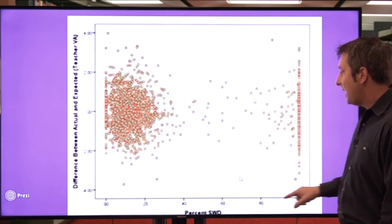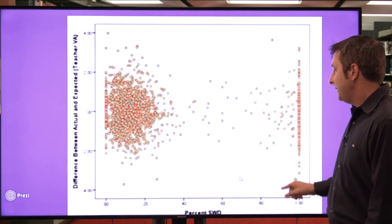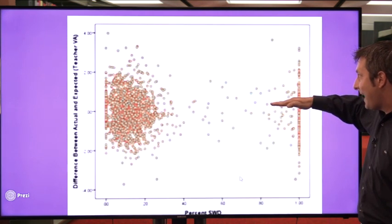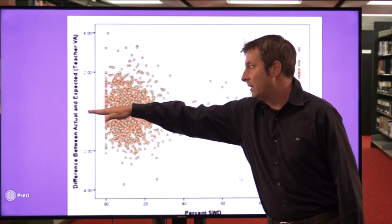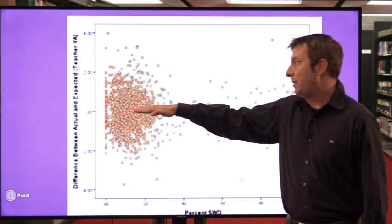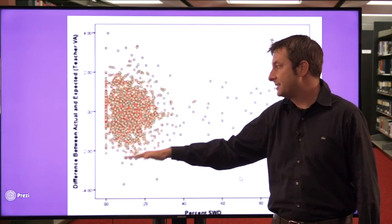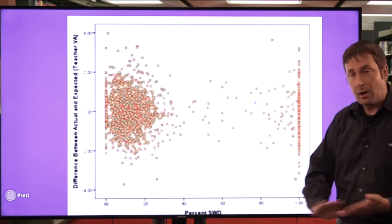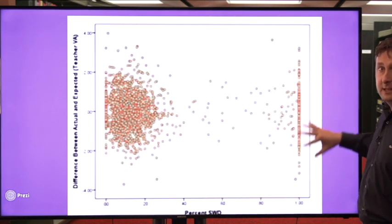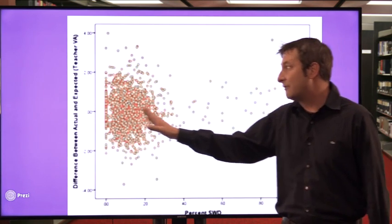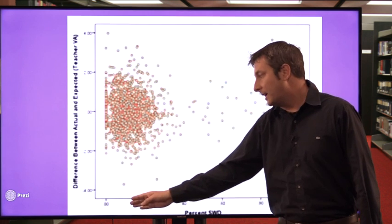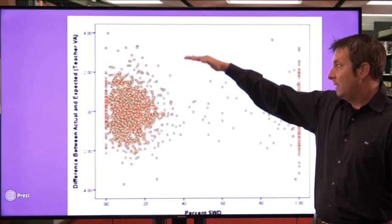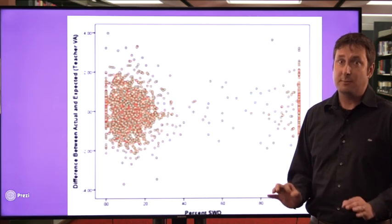Now with the VAM scores on the axis: the bottom shows the percentage of students with disabilities and the VAM scores for teachers of those classrooms. Right at zero — what we would expect — it is perfectly symmetrical. Whether you're a self-contained classroom with 100% students with disabilities, have several, or have the average amount, regardless of student demographic factors, teachers have the same opportunity to help students grow. From above and below that line, it is perfectly even.